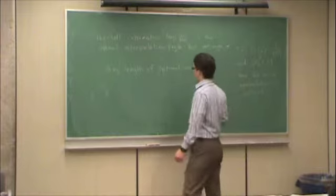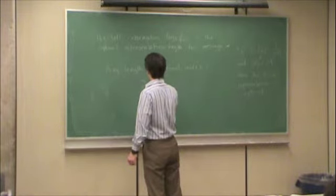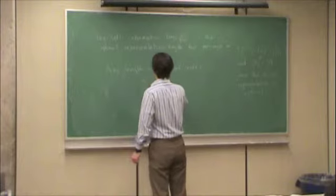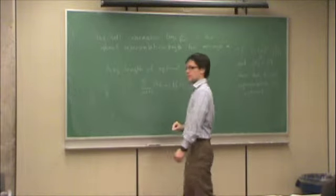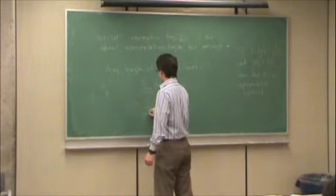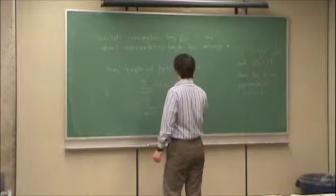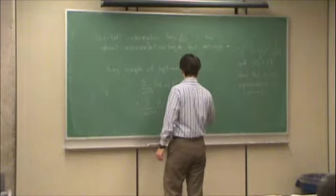It would just be, remember the average length of the optimal code is this, the sum over all the messages, probability of the message times the length of the message, which is equal to the sum over m, probability of m, log 2 of 1 over probability of m.